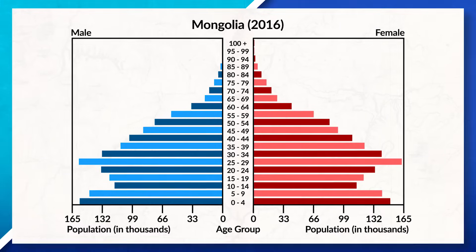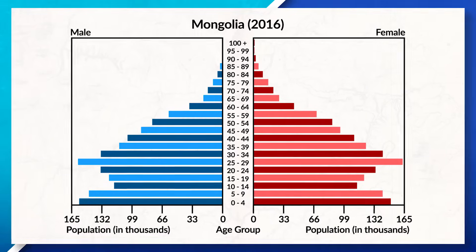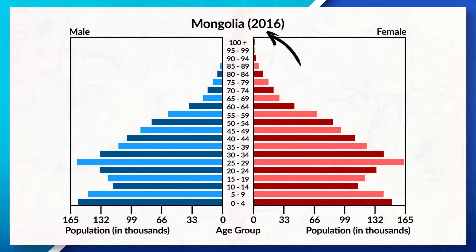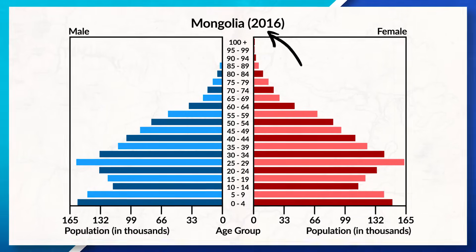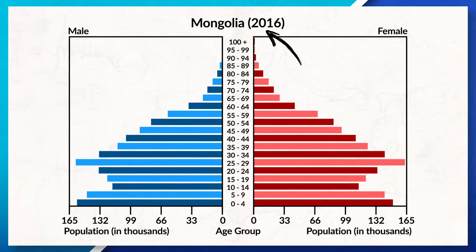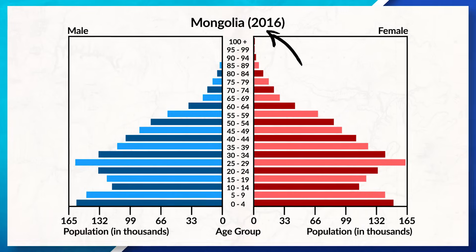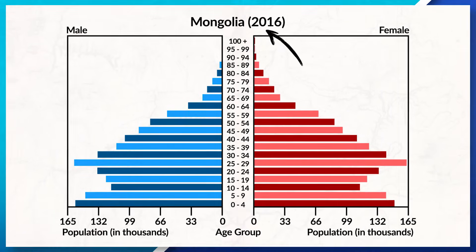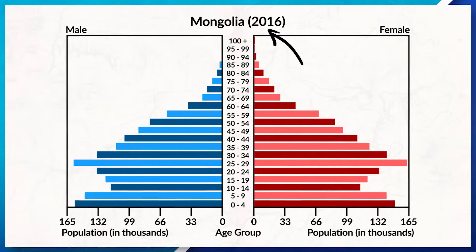For example, here we can see Mongolia's population pyramid from 2016. Today it's 2022, so we know that this data is six years old, which means that the people in each age cohort have now shifted to a new cohort.